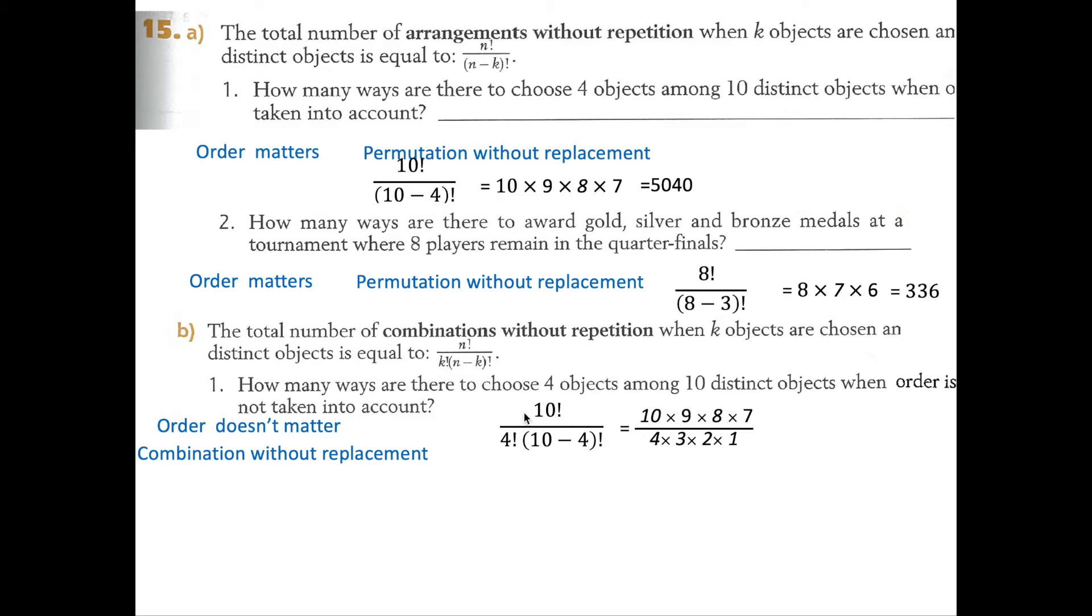10 times 9 times 8 times... because the 10 factorial over the 10 minus 4 factorial is going to be like 10 factorial over 6 factorial. The 6 factorial is going to cancel out the times 6 times 5 times 4 times 3 times 2 that we would have up on the top otherwise here.